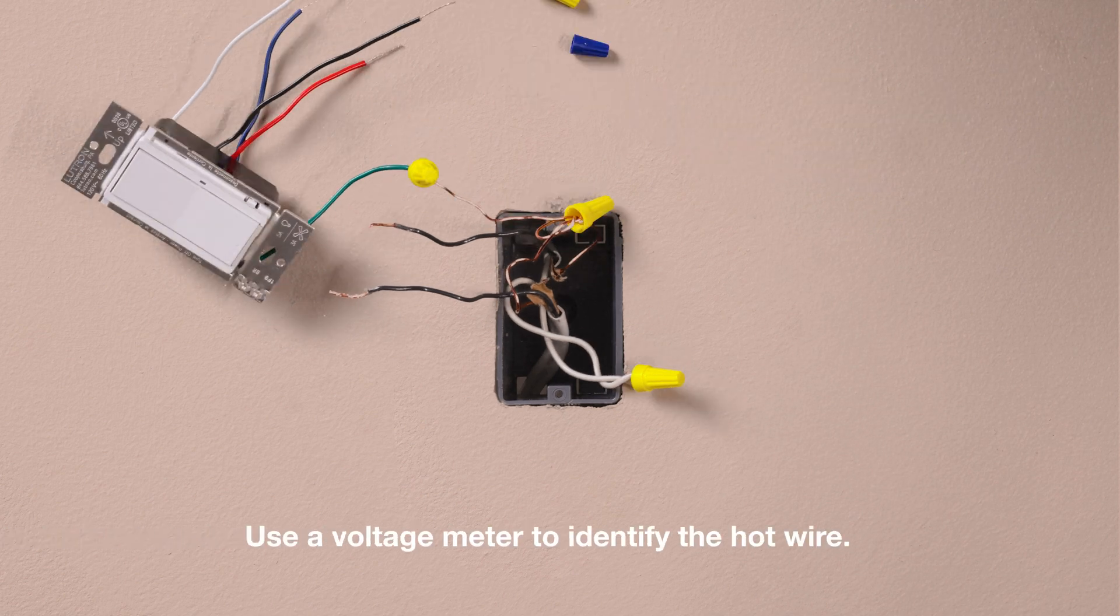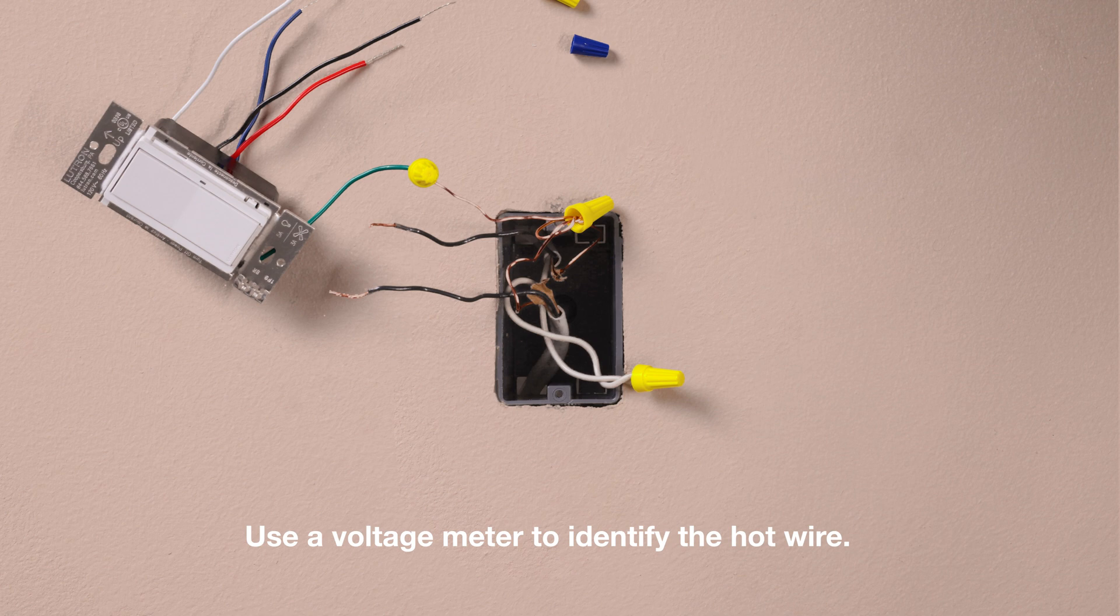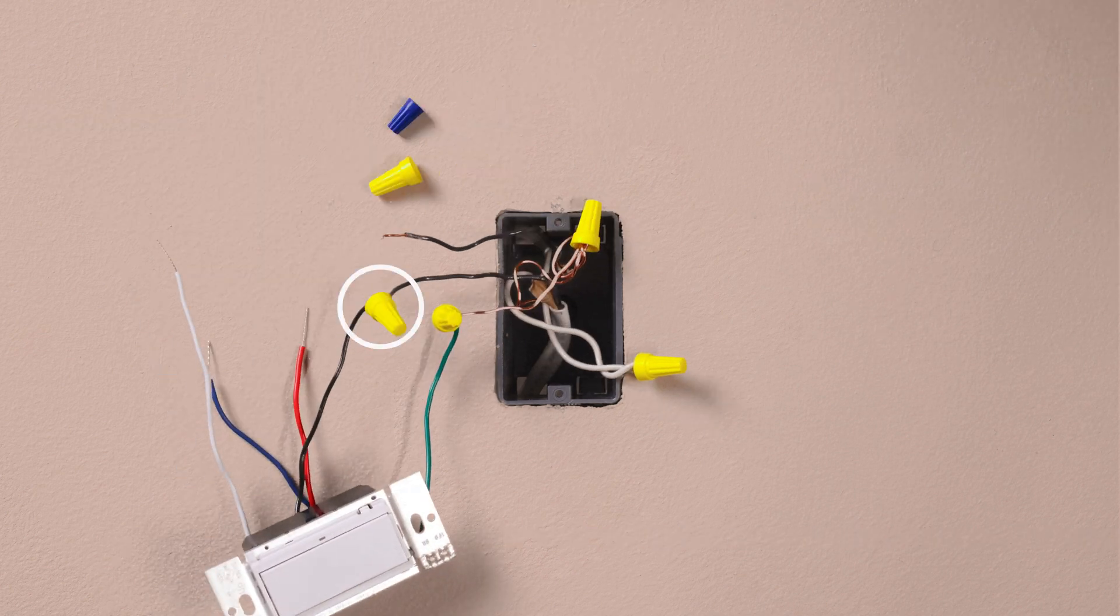Then use a voltage meter to identify the hot wire. Connect the hot wire from your wall to the black wire on your new switch.